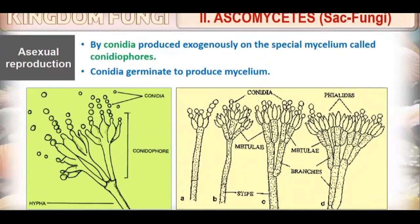Ascomycetes reproduce asexually with the help of exogenous spores called conidia. Conidia are non-motile spores formed in chains on structures called conidiophores. When conidia land on a proper substrate, they germinate and form mycelium.